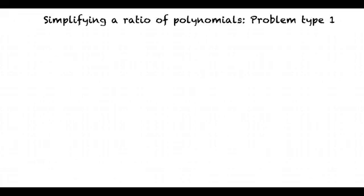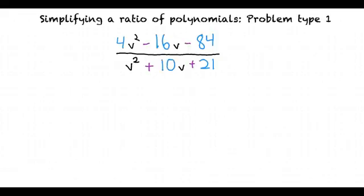The key to simplifying a ratio of polynomials is to simplify the polynomial as much as possible. For this topic, we'll be using the example: 4v² - 16v - 84 divided by v² + 10v + 21.